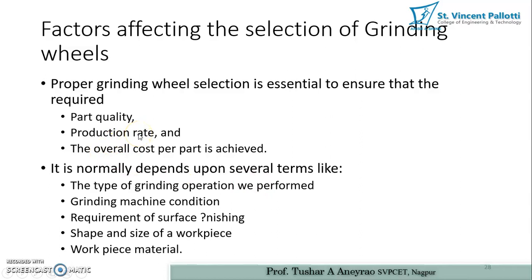Factors affecting the selection of grinding wheels: proper grinding wheel selection is essential to ensure the required part quality, production rate, and overall cost per part. Selection normally depends on several factors: the type of grinding operation, machine condition, surface finish requirement, shape and size of the workpiece, and workpiece material.